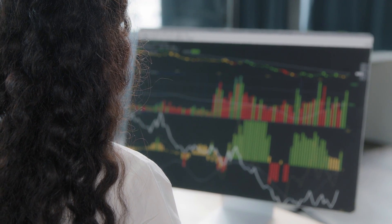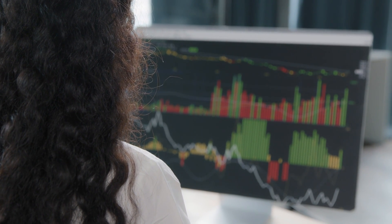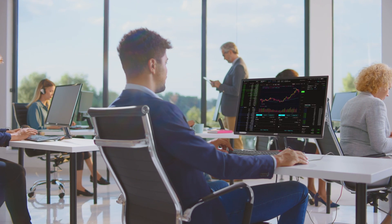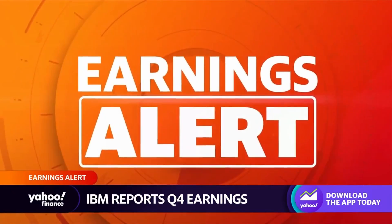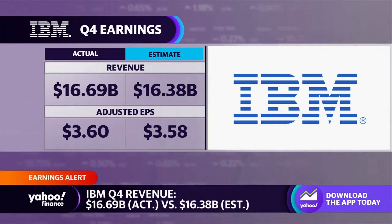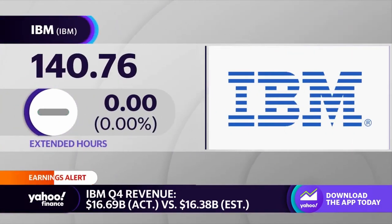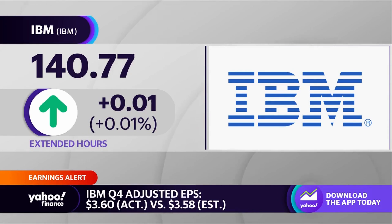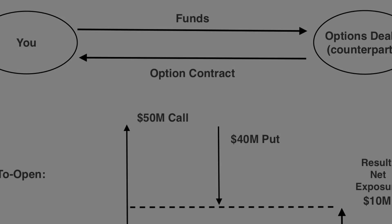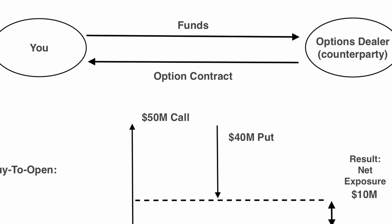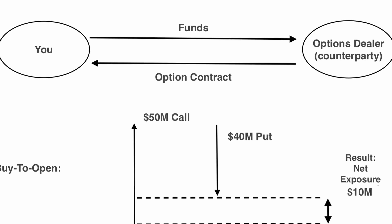Once calculated, the net exposure of a fund is usually expressed as a percentage, displaying the fund's risk with regard to market fluctuations. Say you are bullish on IBM. You go out and buy $50 million of long-dated call options. Since you're afraid of losing money in case IBM misses its earnings call, loses revenue, or experiences some other negative event while your position is open, you go and buy $40 million of put options with the same expiry date. Thus, your new net exposure position is only $10 million long.